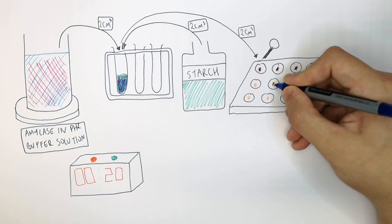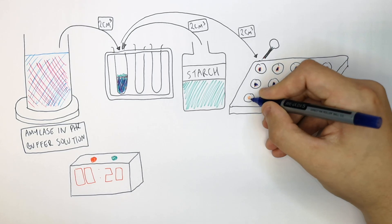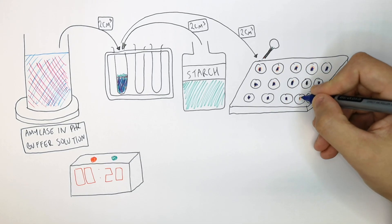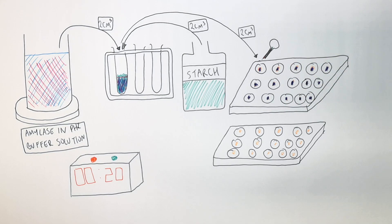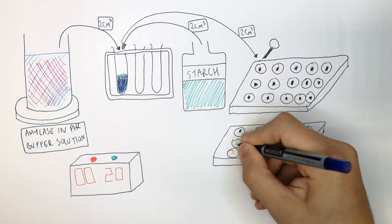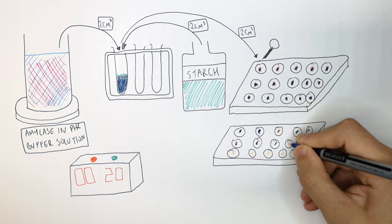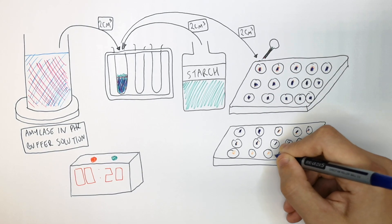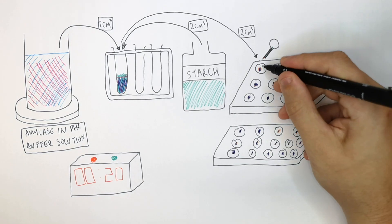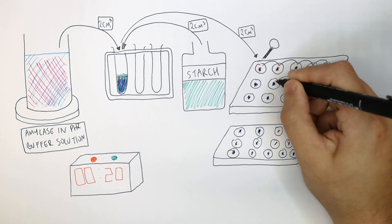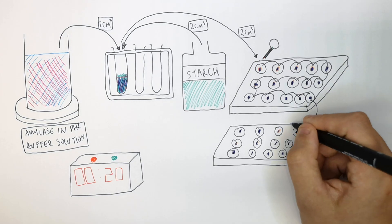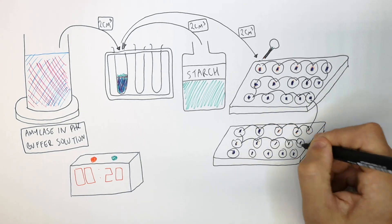The iodine remains blue, indicating the starch is not being broken down. If you need to continue to another plate, do so — the starch is still not being broken down. At around 600 seconds with no breakdown observed, you have to consider that something may have happened to the enzyme.